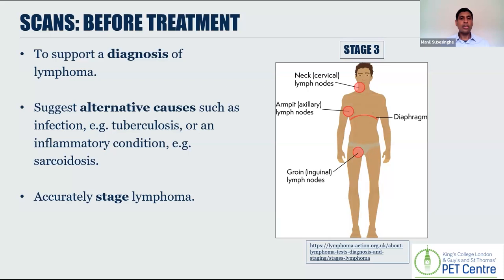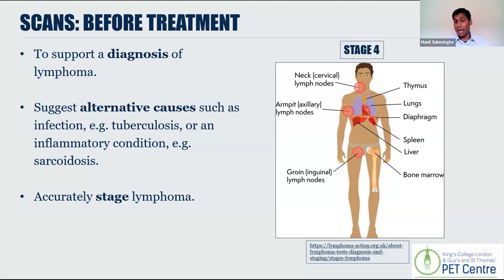As soon as we have nodal enlargement on either side of the diaphragm, that's called stage three. And then when we have sites of disease where we don't tend to find white blood cells — which is where lymphoma comes from — such as the lung, the liver, or the bone marrow, we would call that stage four.